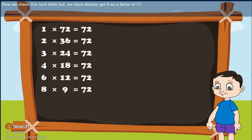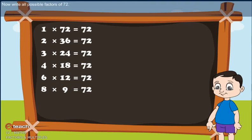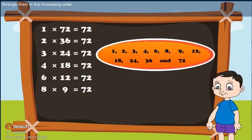Now we check the next table. But we have already found 9 as a factor of 72. We need not check other tables if we have already found the same factor from another table. Now write all possible factors of 72 and arrange them in increasing order. These are all the possible factors of 72.